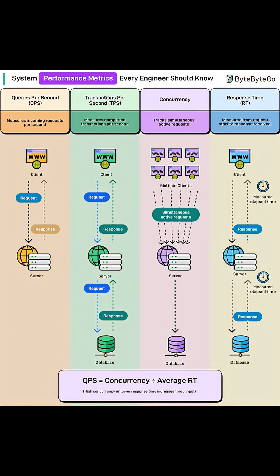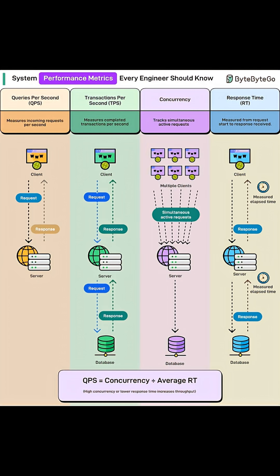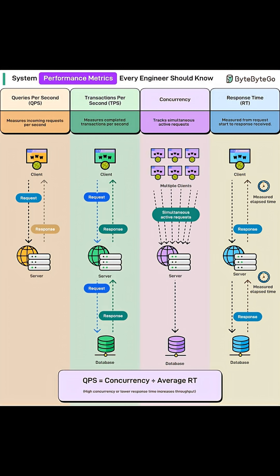Here's the key formula: QPS equals concurrency divided by average response time. That means higher concurrency or faster responses boost throughput.